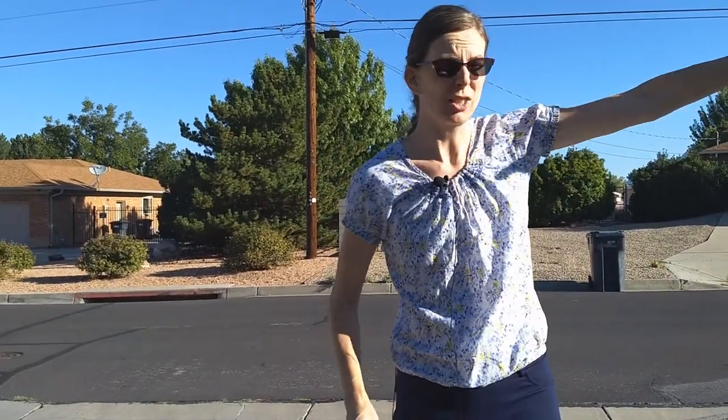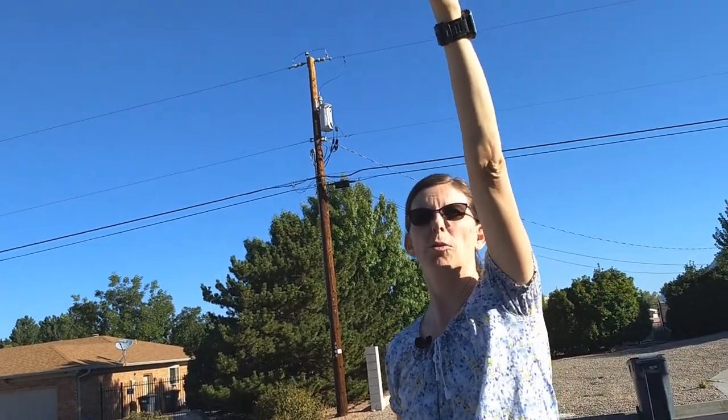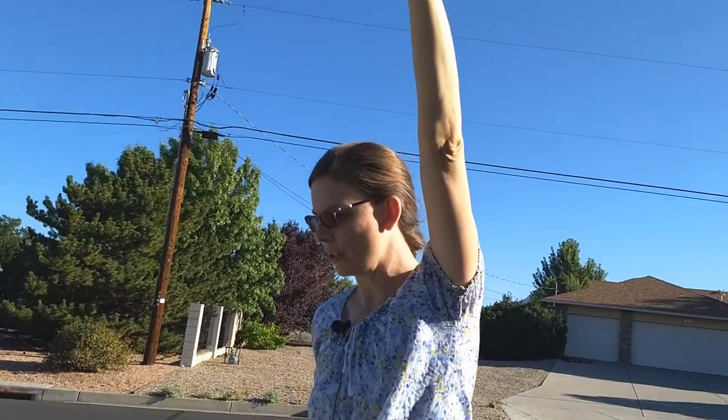How could we use the sun to tell direction? Well, we know that the sun rises in the east. In Albuquerque, that's where the mountains are, so you can easily tell where that is. And the sun sets in the west. Since we are in the northern hemisphere — the northern top of the earth — the sun is also a little bit to the south. So at noon, the sun will be right overhead but a little bit to the south, and our shadow will point just a little bit to the north.